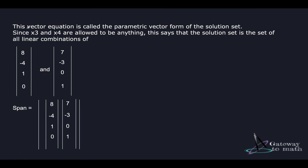This vector equation is called the parametric vector form of the solution set. Since x3 and x4 are allowed to be literally any values, the solution set is the set of all linear combinations of [8, -4, 1, 0] and [7, -3, 0, 1]. Now you have direct values across which the entire vector space is spanned.